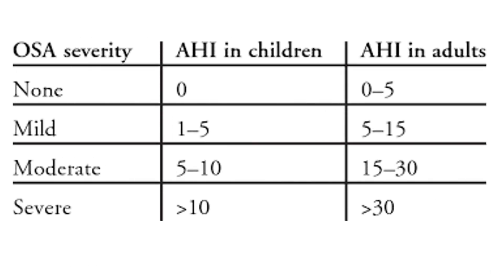We can also grade the severity of obstructive sleep apnea based on the apnea-hypopnea index on polysomnography. In children, mild is between 1 to 5, moderate from 5 to 10, and greater than 10 is severe.